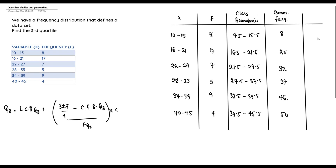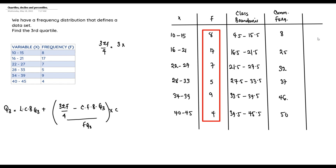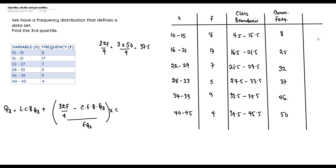Now we need to find the position of the third quartile. Using 3Σf/4: the total frequency Σf = 8 + 17 + 7 + 5 + 9 + 4 = 50, so 3 × 50 / 4 = 150 / 4 = 37.5. Our third quartile is located at the 37.5th position — we can approximate to 38, but I prefer to use 37.5.